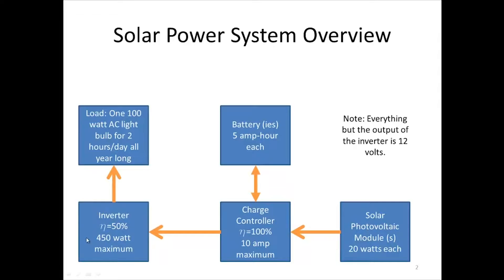Then we have an inverter. What an inverter does is take DC electricity and convert it to AC electricity, and it loses some electricity along the way. We're going to assume our efficiency is 50%. Efficiency is a lot of times labeled with the Greek letter eta — so whenever you see eta, think efficiency.